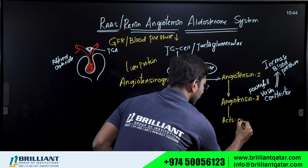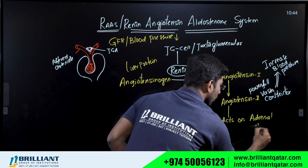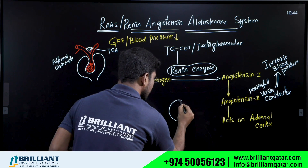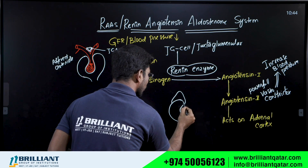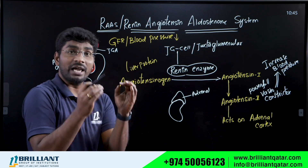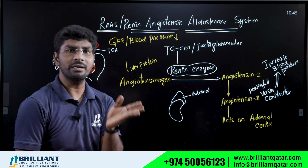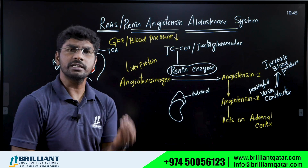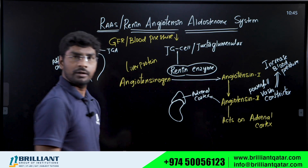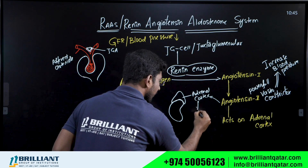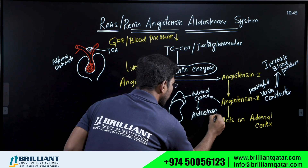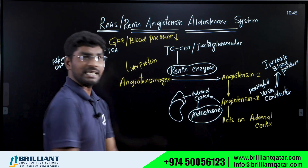Angiotensin 2 also performs a second function — it acts on the adrenal cortex. On top of the kidney, there is a gland called the adrenal gland. The outer part is called the adrenal cortex, which secretes hormones like mineralocorticoids, glucocorticoids, and sex corticoids. Angiotensin 2 stimulates the adrenal cortex to secrete a hormone called Aldosterone.